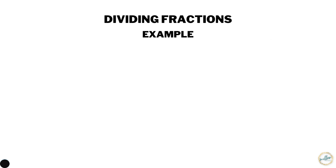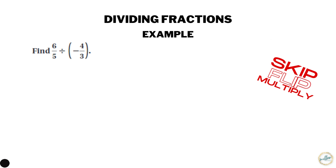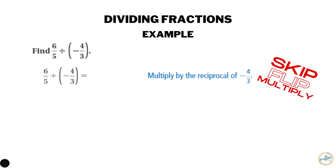Now that we've practiced multiplying fractions, let's practice dividing fractions. Our first example is six-fifths divided by negative four-thirds. When you first learned to divide fractions you probably learned to skip, flip, multiply — or multiply by the reciprocal of the second number.